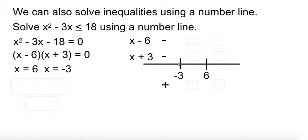Let's pick a number between negative 3 and 6. I like 0, because 0 is an easy number to work with. 0 minus 6 is negative 6. 0 plus 3 is positive 3. Negative times positive gives me a negative answer between here and here.